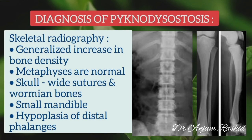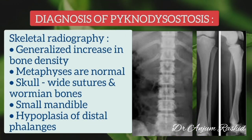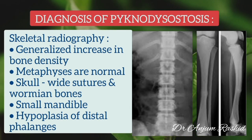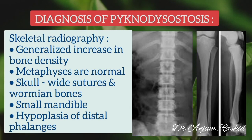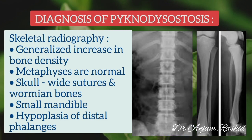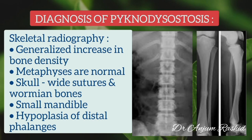For diagnosing pycnodysostosis, skeletal radiographs are taken. They show a generalized increase in bone density; metaphyses are normal. The skull shows wide sutures and Wormian bones. There is a small mandible and hypoplasia of the distal phalanges on hand X-ray.